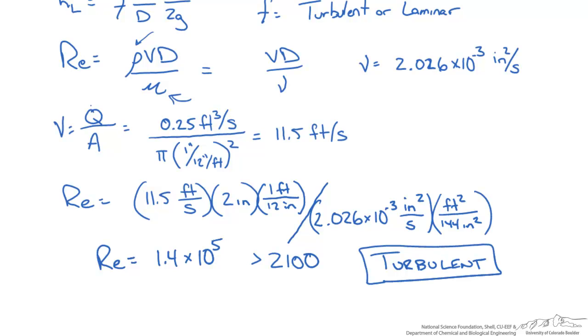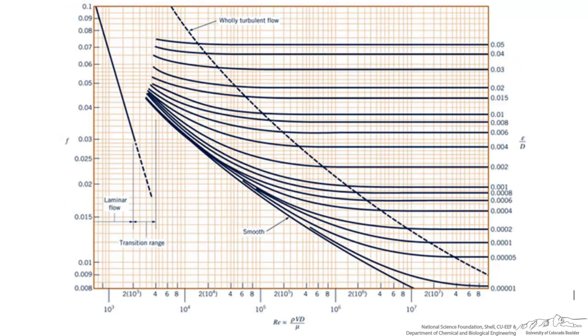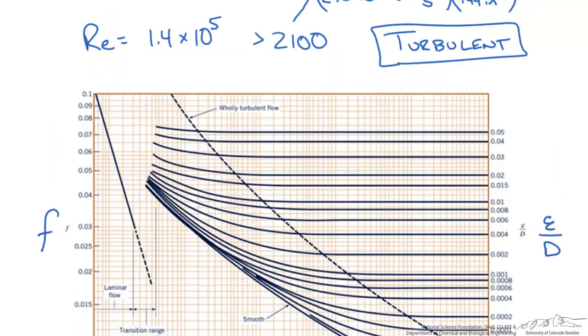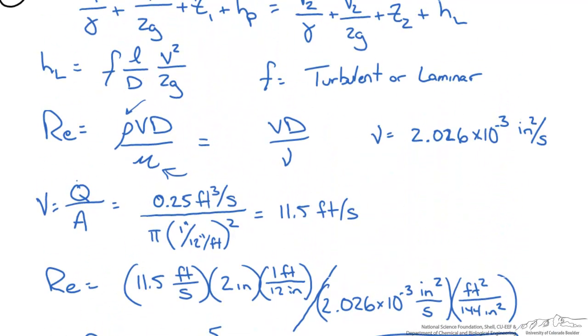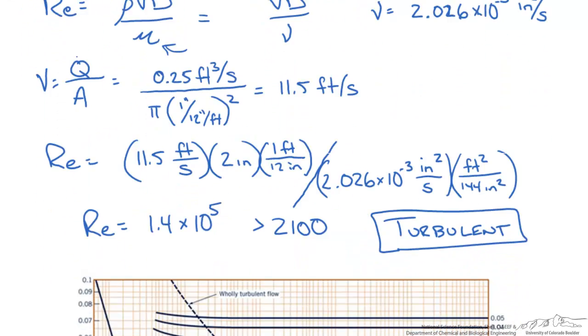We're going to take this information to what is called a Moody chart to help relate a frictional factor to our flow. Here is our Moody chart—a logarithmic plot where on the left y-axis we have our frictional factor, on the bottom we have Reynolds number, and on the right we have relative roughness, which is the relationship between pipe roughness and diameter. This is important because we're looking for our head loss term which has our frictional factor within it.